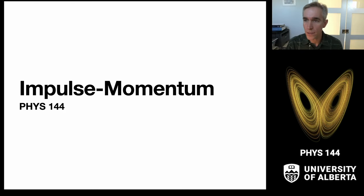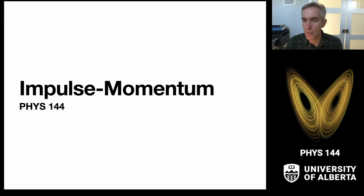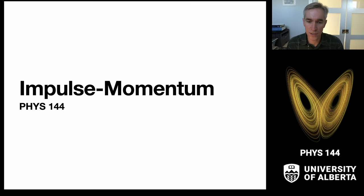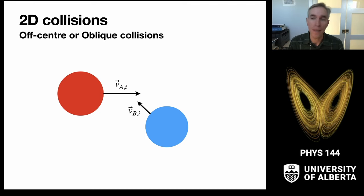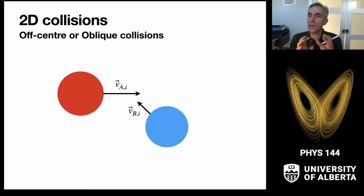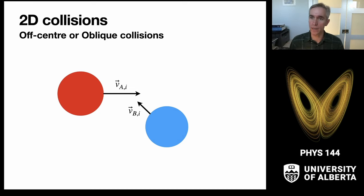2D collisions are sufficient for studying everything in physics because we can always reduce any collision in three dimensions down to a single plane of collision defined by two velocity vectors. This is the necessary and sufficient representation of the physics we will deal with. We want to think about off-center or oblique collisions, and we'll use round objects since everything can be approximated as a round object with an appropriate radius of curvature.